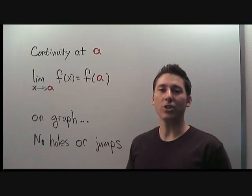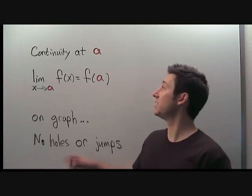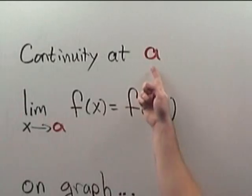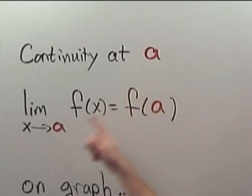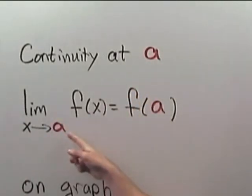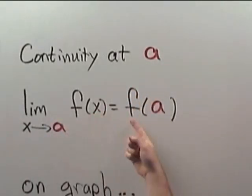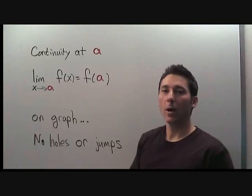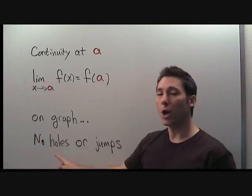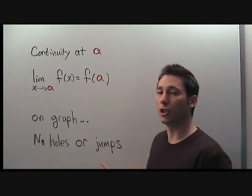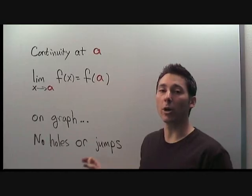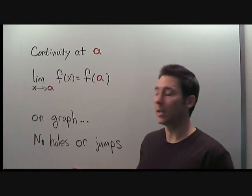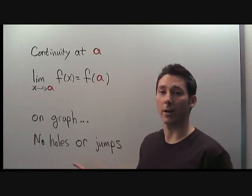Algebraically, we can check if a function f is continuous at a point a if the limit as x approaches a of f of x is f of a. What that means on the graph is basically there are no holes and there are no jumps. The situation can be more complicated than that, but this should take care of us for now.